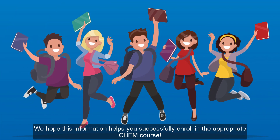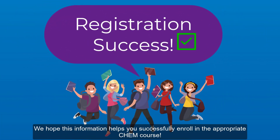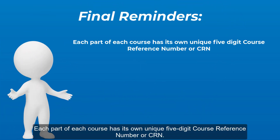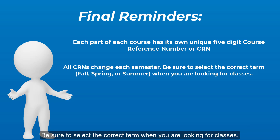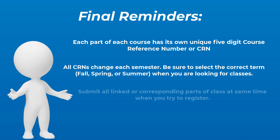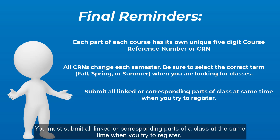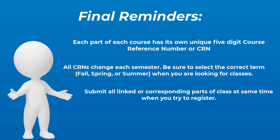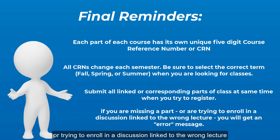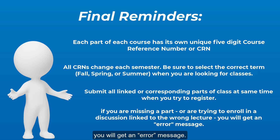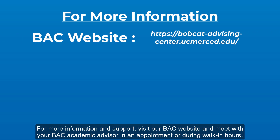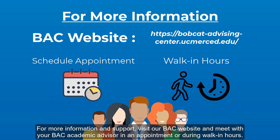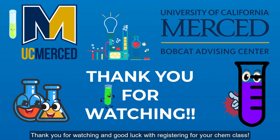We hope this information helps you successfully enroll in the appropriate Chem course. A few final reminders: each part of each course has its own unique 5-digit course reference number or CRN, and all CRNs change each semester, so be sure to select the correct term when looking for classes. You must submit all linked or corresponding parts of a class at the same time when registering — if you are missing a part or trying to enroll in a discussion linked to the wrong lecture, you will get an error message. For more information and support, visit our BAC website and meet with your BAC Academic Advisor in an appointment or during walk-in hours. Thank you for watching and good luck with registering for your Chem class.